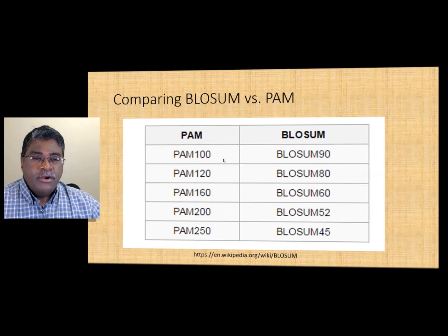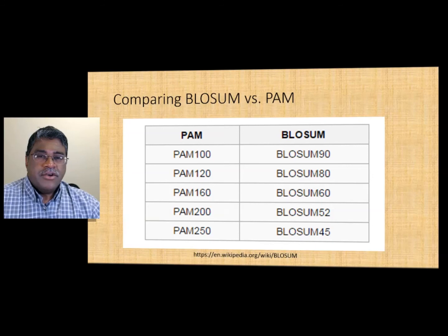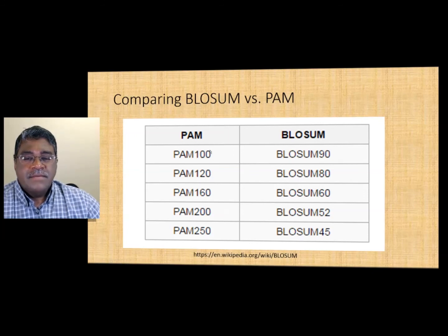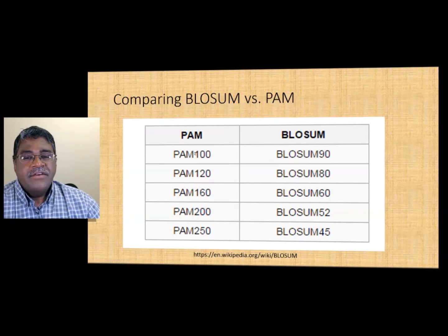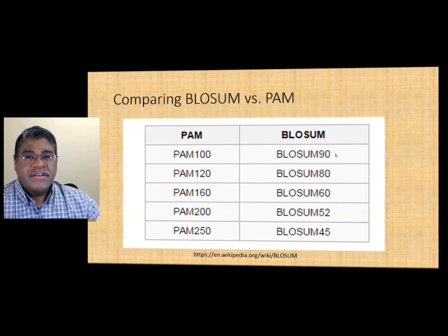BLOSUM and PAM are essentially opposite to each other: BLOSUM measures similarity while PAM captures mutability, which measures differences. Therefore, the higher the PAM number, the lower the corresponding BLOSUM number — they are inversely related. A PAM 100 means the sequences used had 90% similarity and very low mutability, i.e., few mutations were observed. The smaller the difference, the larger the similarity.